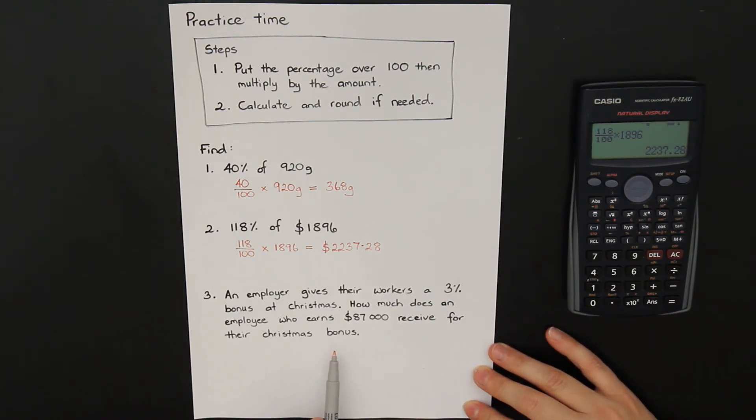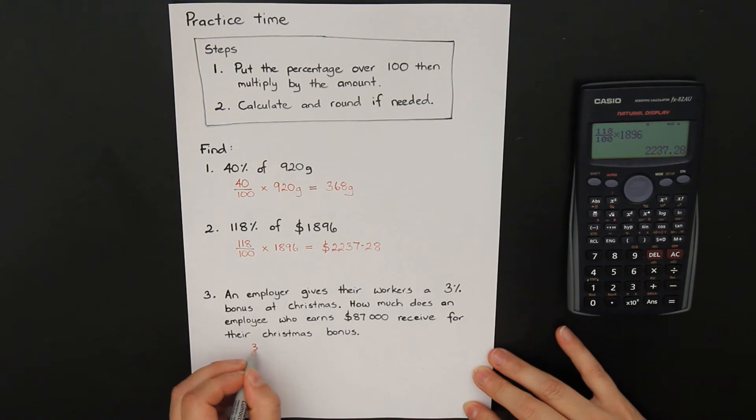Taking all the wordiness out of it, we just want to find what 3% of 87,000 is. So 3% is 3 over 100 times by 87,000.